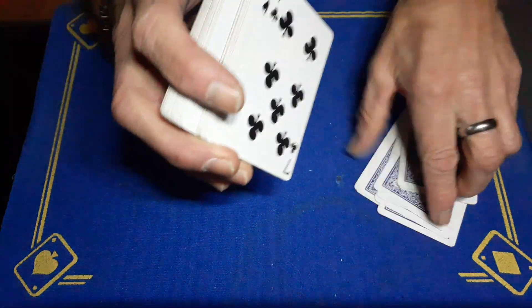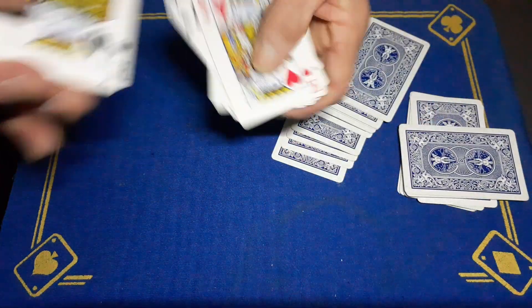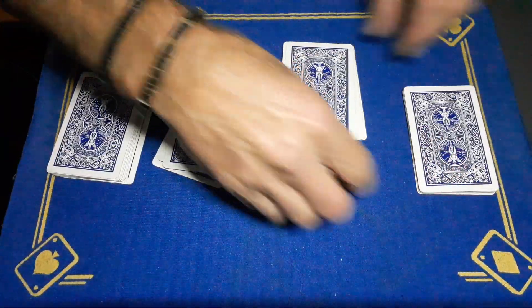We're going to shuffle off some cards. We'll make some piles, four piles, four random piles. Spectators have shuffled the cards.